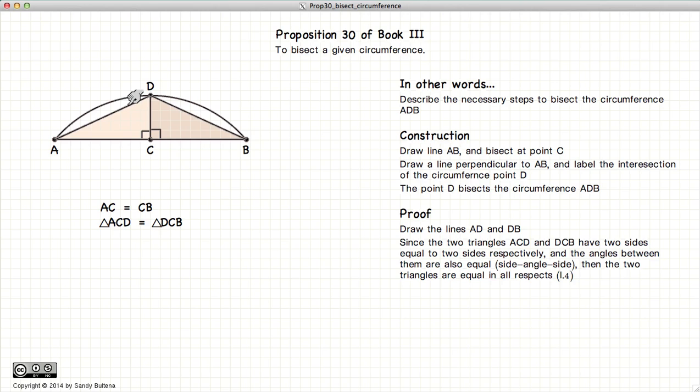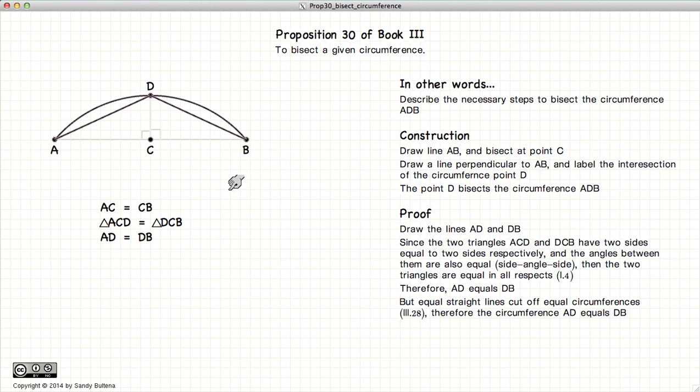In other words, AD is equal to DB. Now we know from Proposition 28 of Book 3 that equal lines subtend equal circumferences. So since AD is equal to DB, the circumference AD is equal to DB.